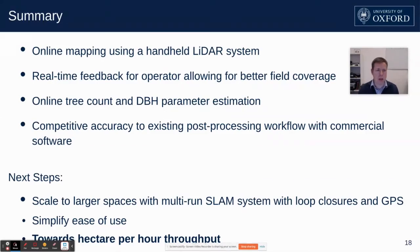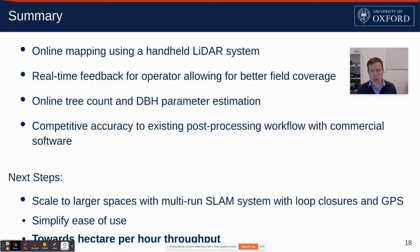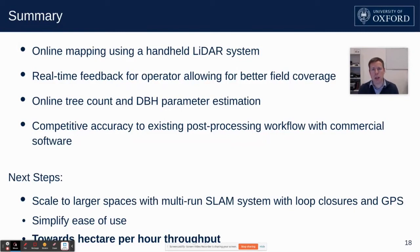To summarize, we've presented an online mapping system that uses a handheld laser system to, in real time, extract and detect individual trees and their DBH — diameter at breast height. It achieves competitive performance with existing commercial systems but gives real-time feedback to an operator, allowing better field coverage. Our next steps are to scale the system to larger spaces, add multi-run capability, incorporate GPS when available, move towards an easier-to-use system, and look at metrics like how many hectares we can scan and filter per unit hour. Thank you very much.